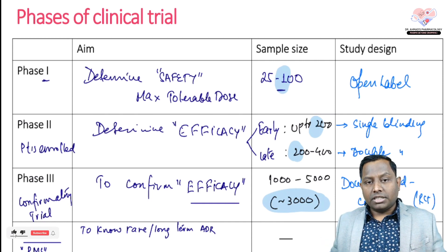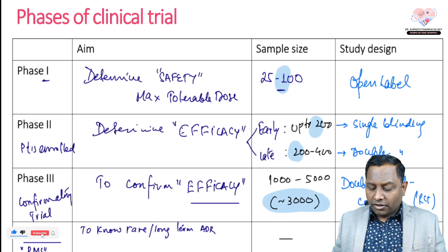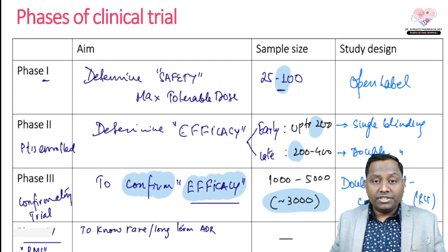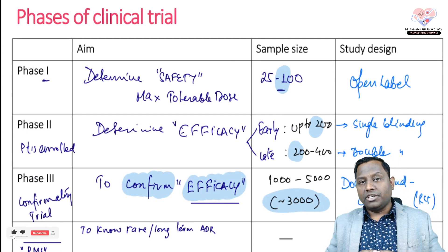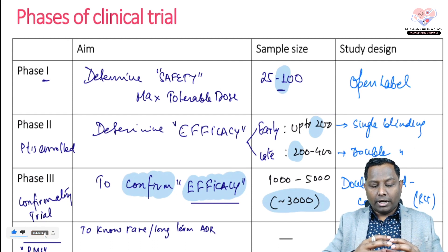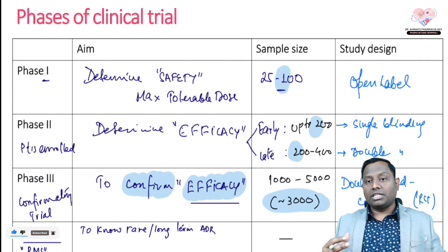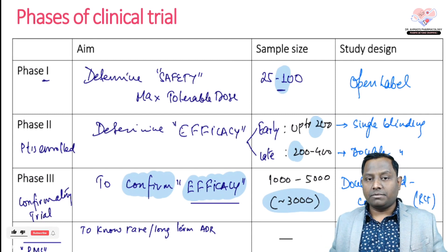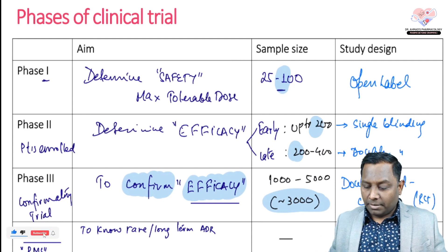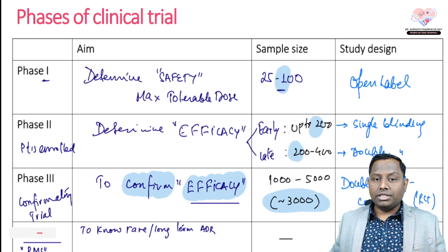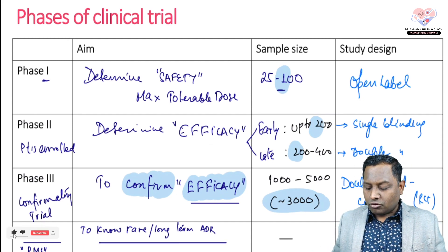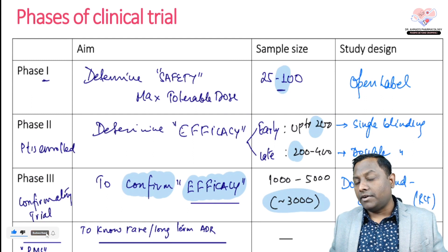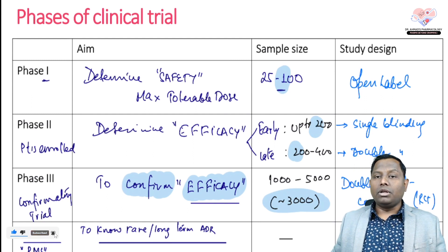Phase 3 is a confirmatory trial — to confirm efficacy. There is not much difference between Phase 2 and Phase 3, but Phase 3 has a larger number of patients and is often a multi-centric trial. Phase 4 is post-marketing surveillance (PMS) to know rare long-term effects, with no limit on sample size.